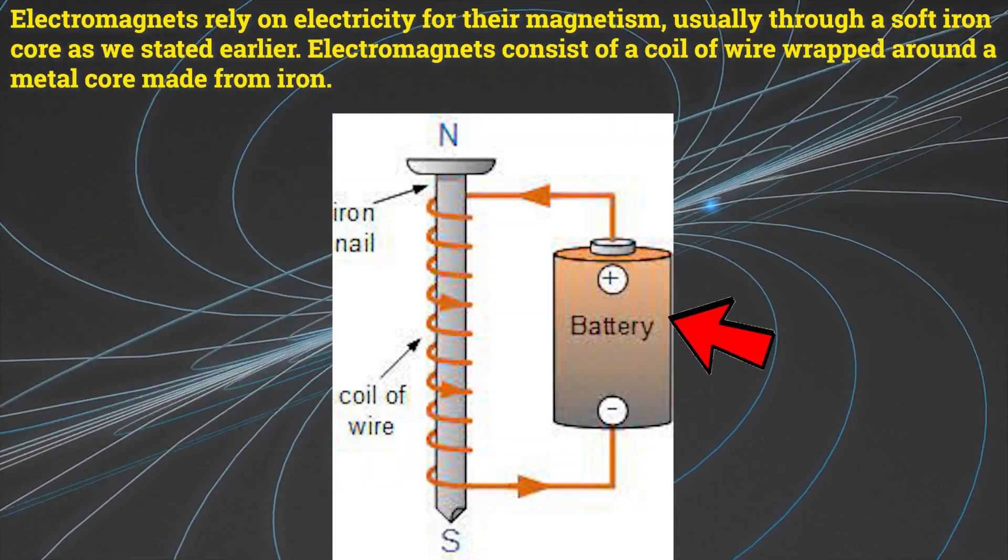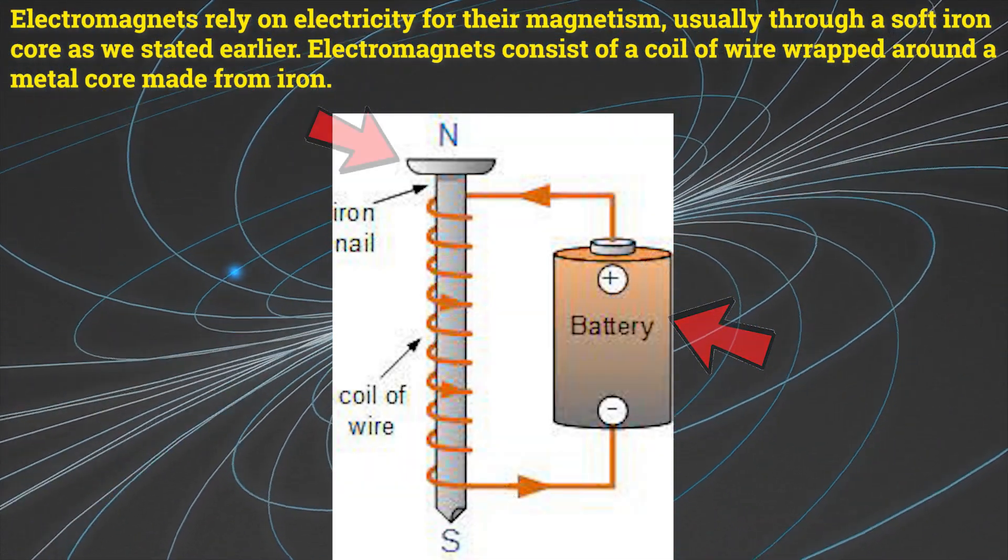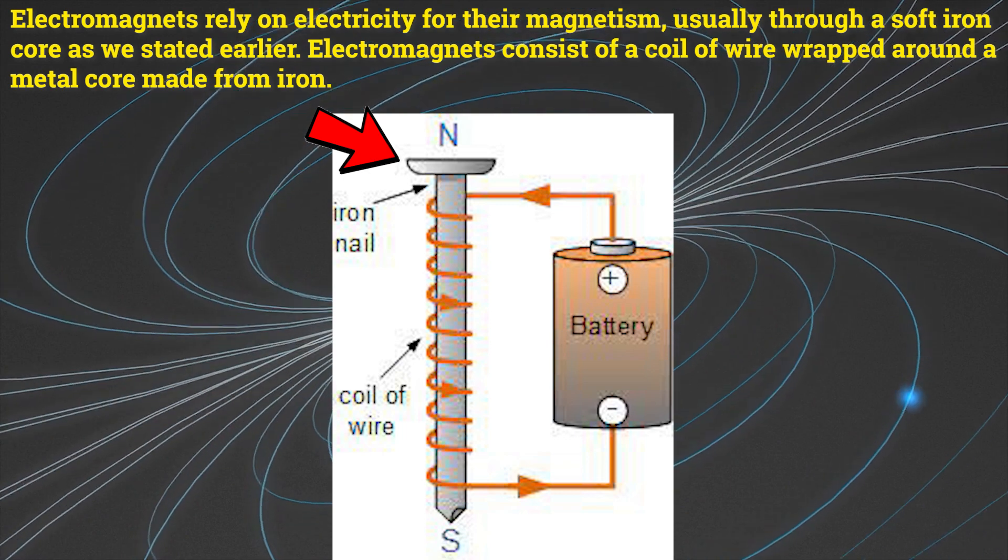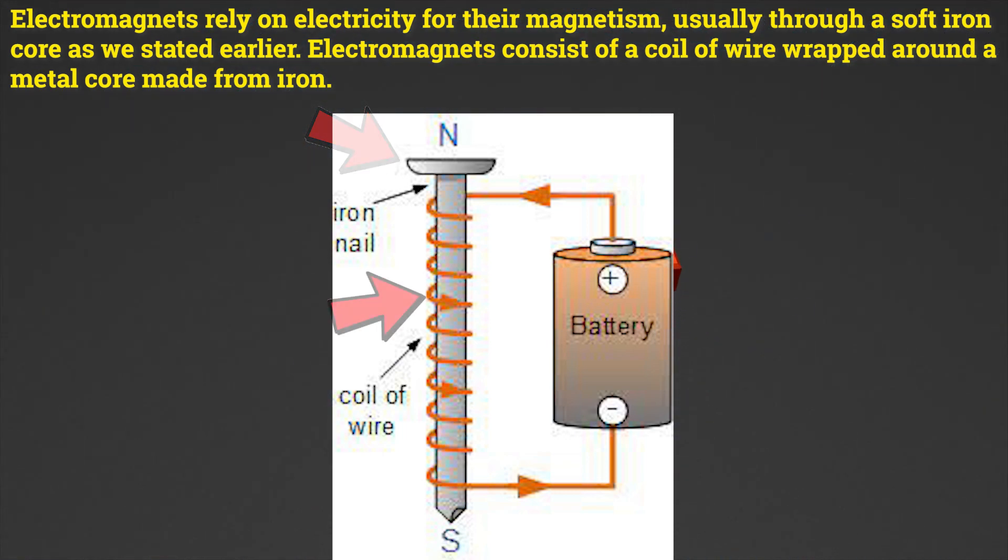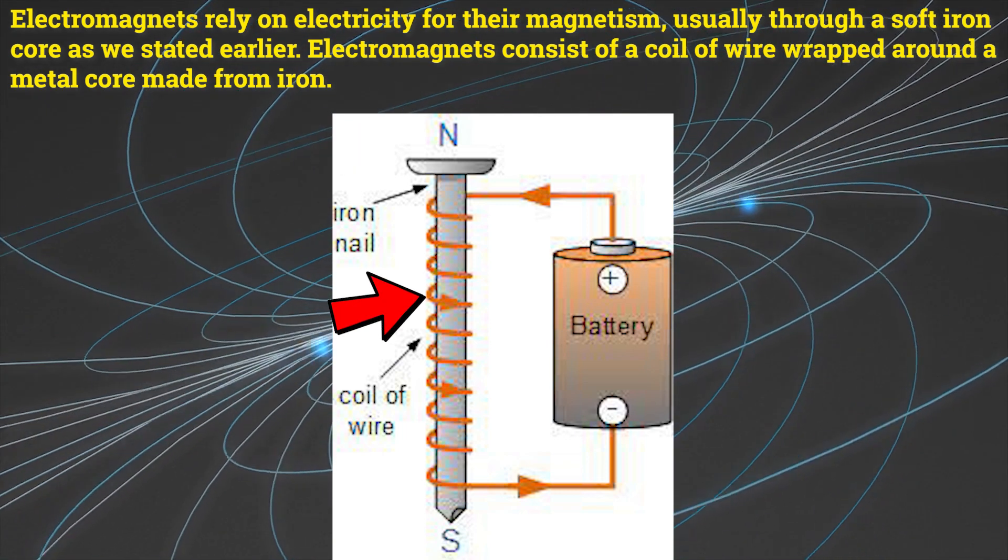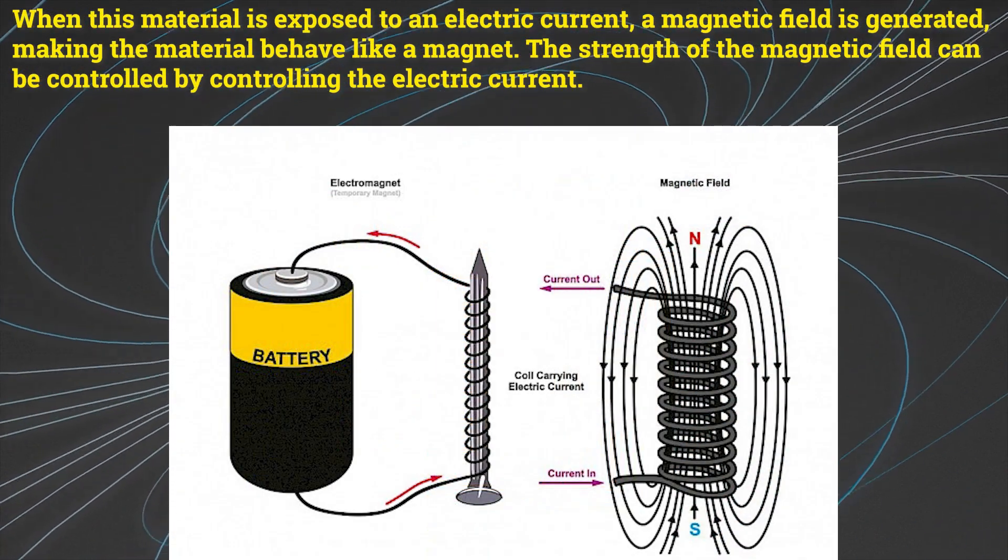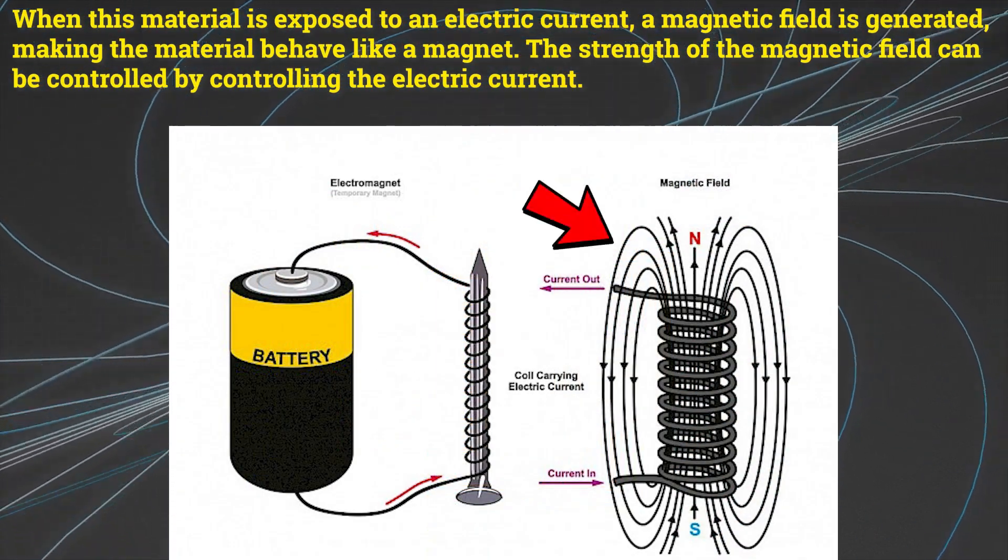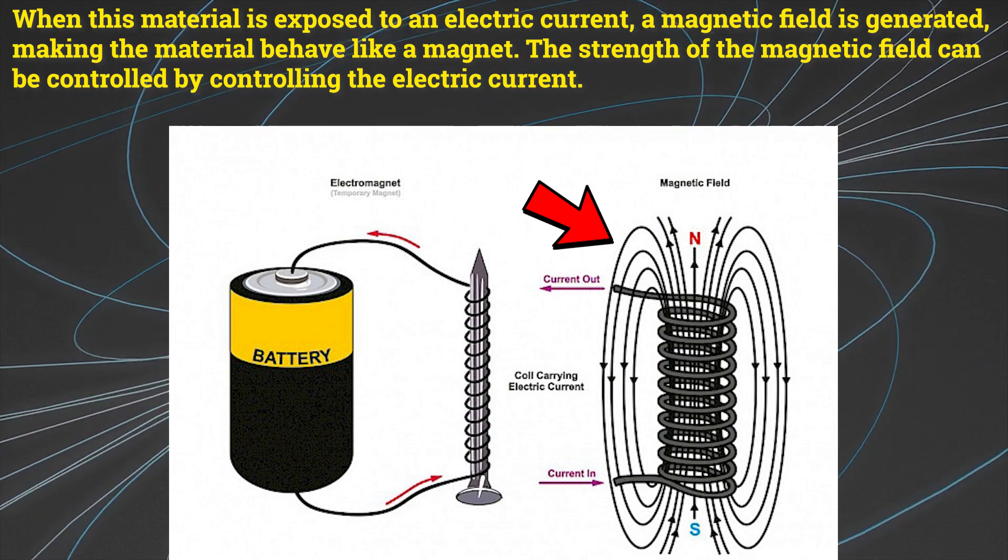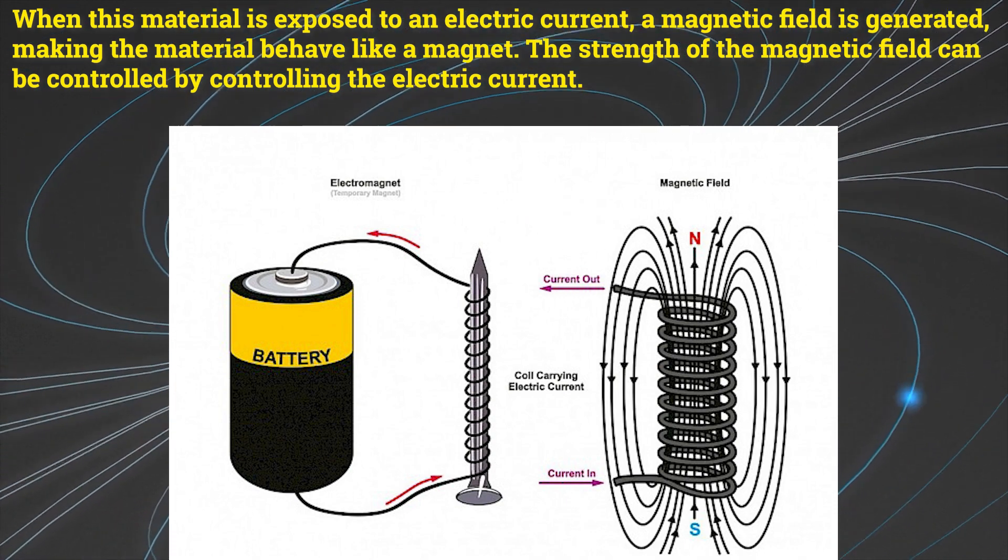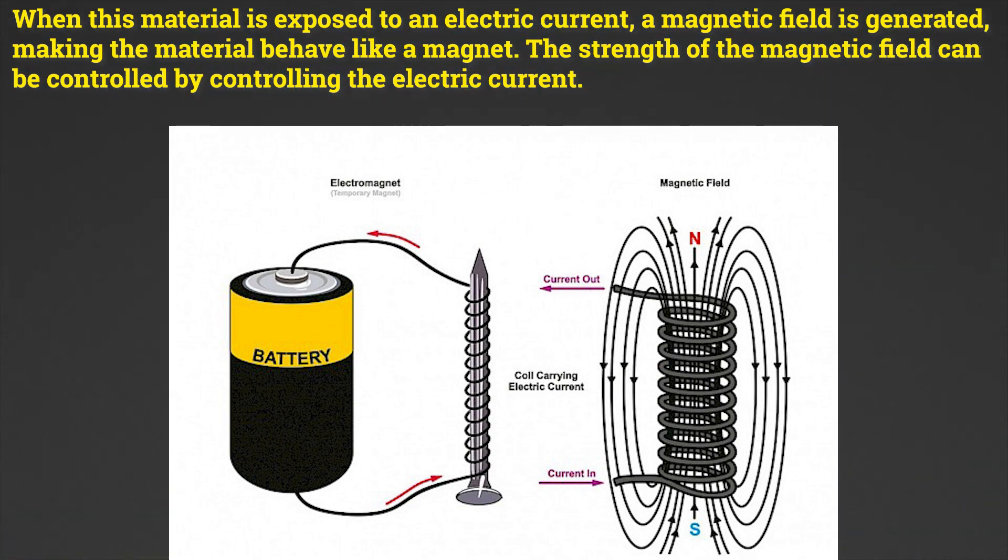Electromagnets rely on electricity for their magnetism, usually through a soft iron core, as we stated before. Electromagnets consist of a coil of wire wrapped around a metal core made from iron. When this material is exposed to an electric current, a magnetic field is generated making the material behave like a magnet. The strength of the magnetic field can be controlled by controlling the electric current.